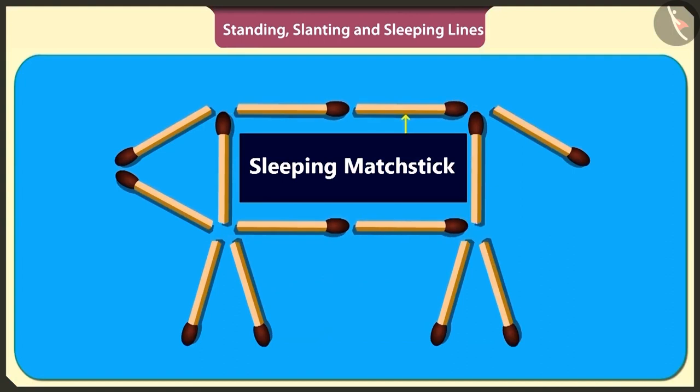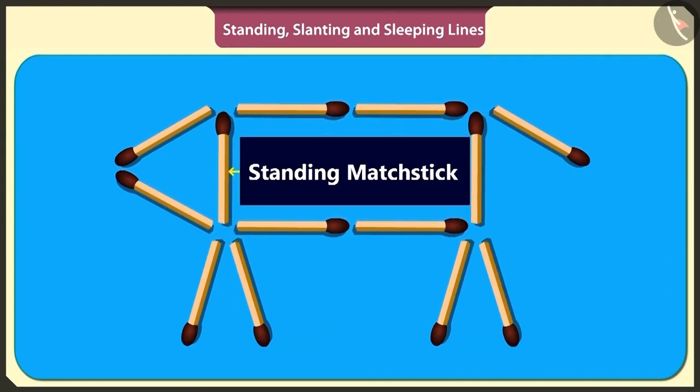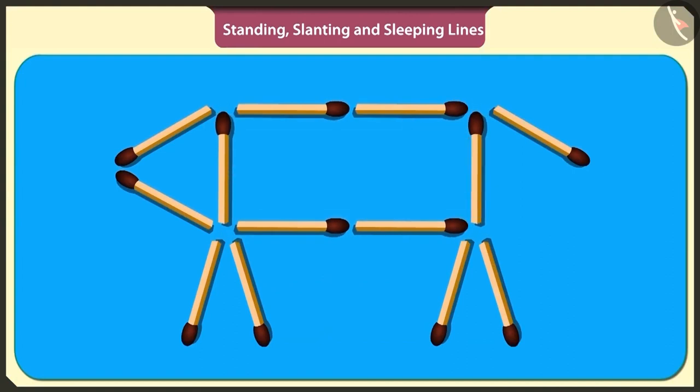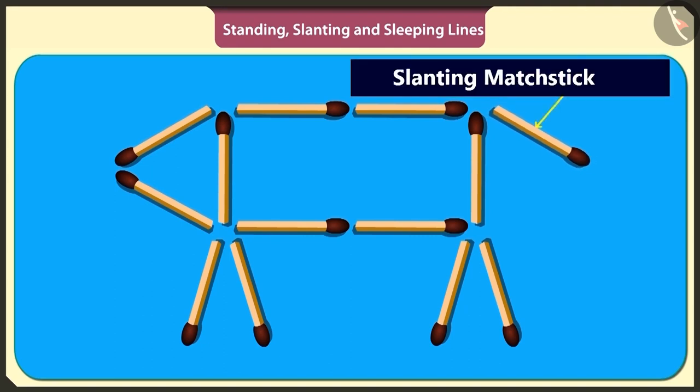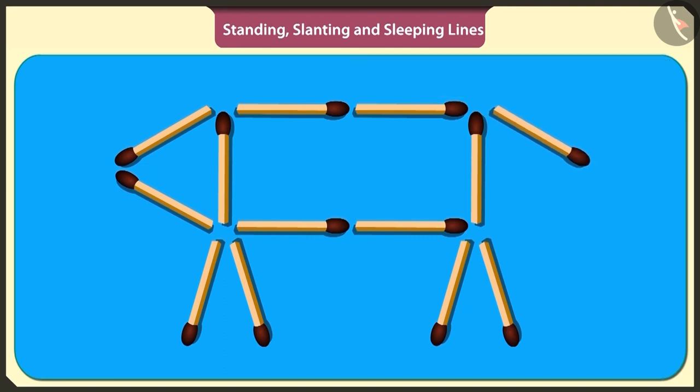We made the dog's tummy using four sleeping sticks and two standing sticks. The dog's face is made using two slanting sticks. To make the dog's tail, one slanting stick has been used. Yes, and four standing sticks have made the four legs of the dog.